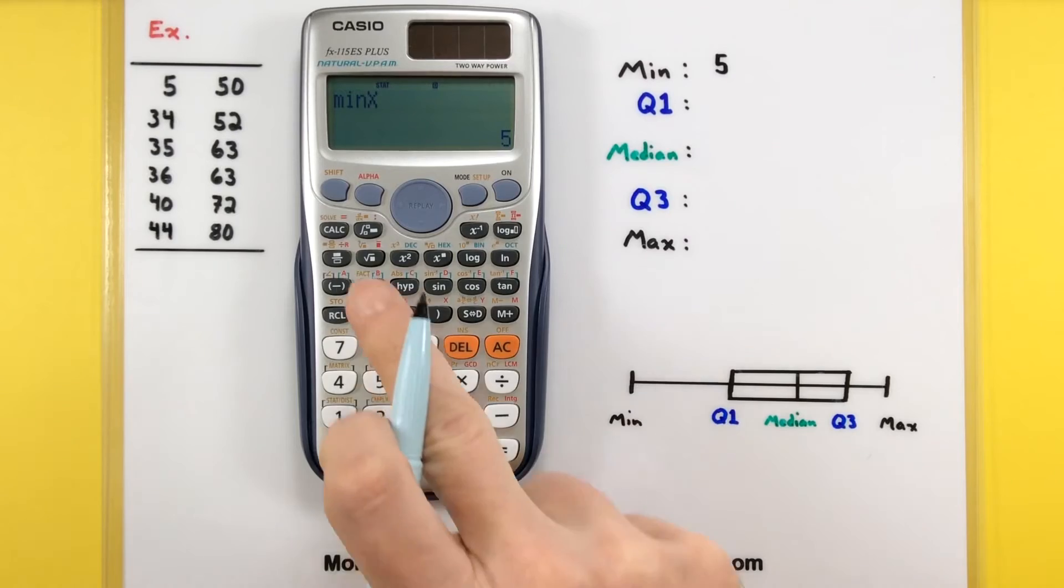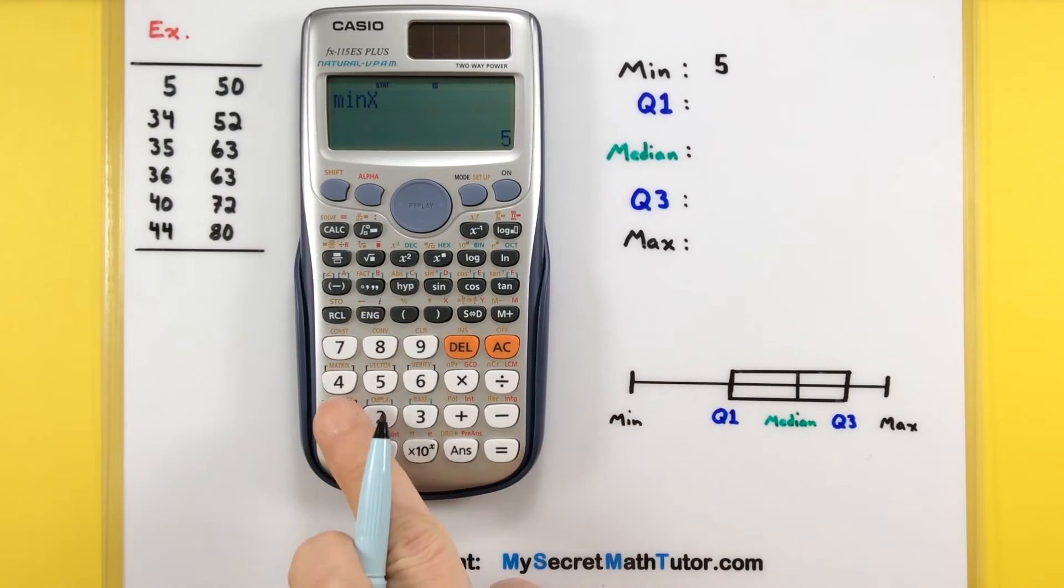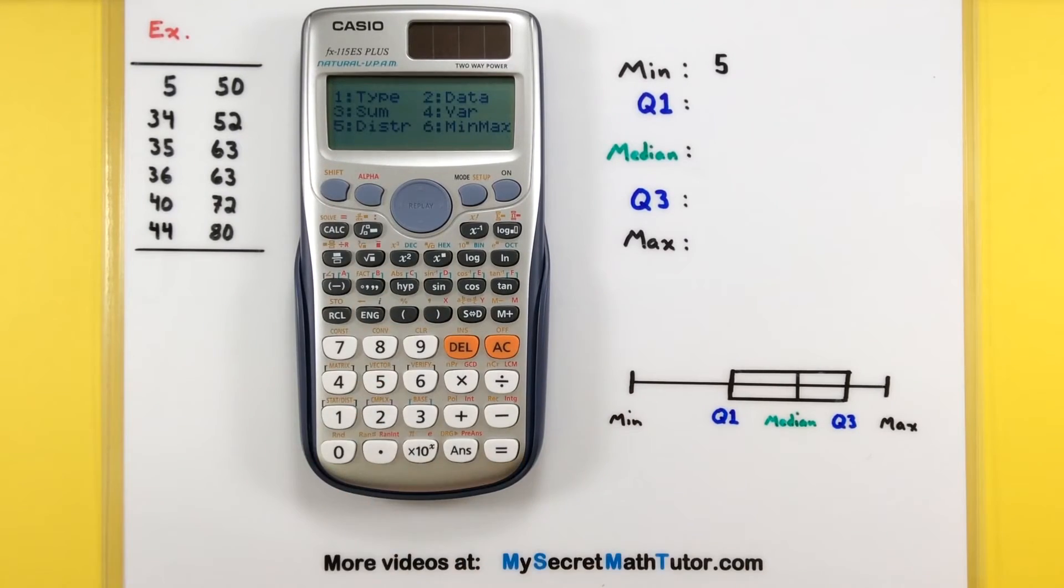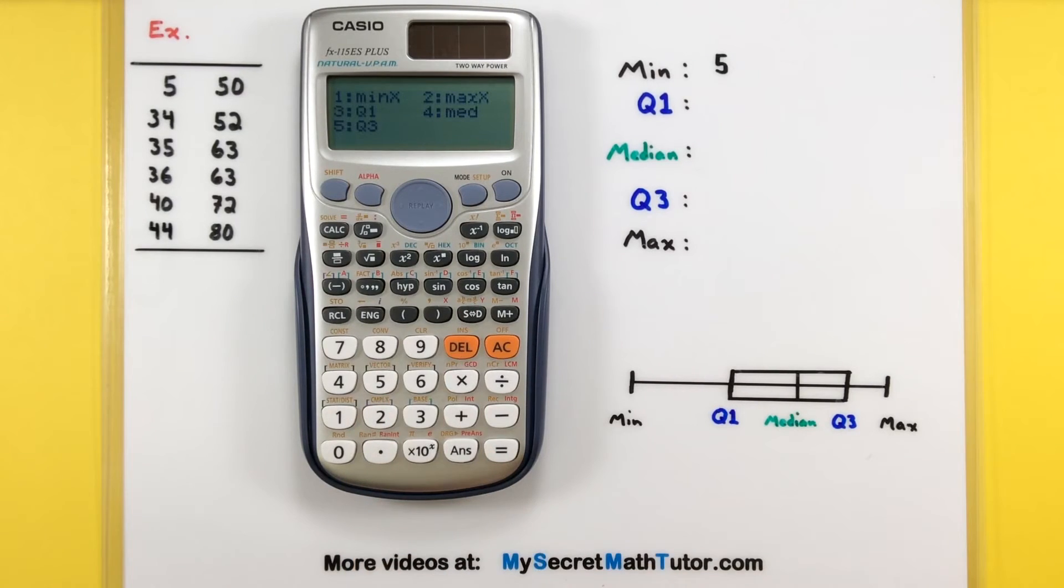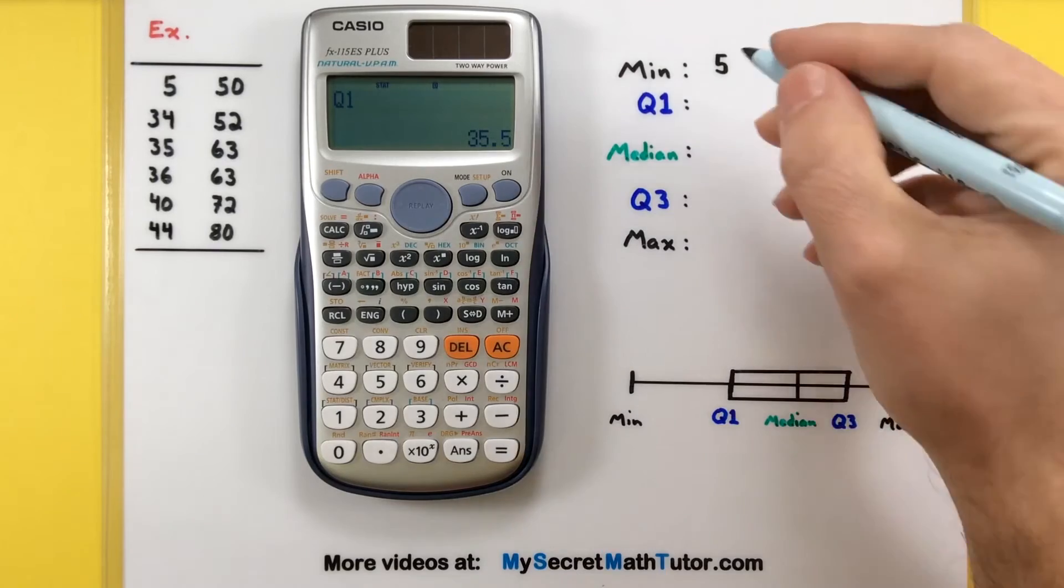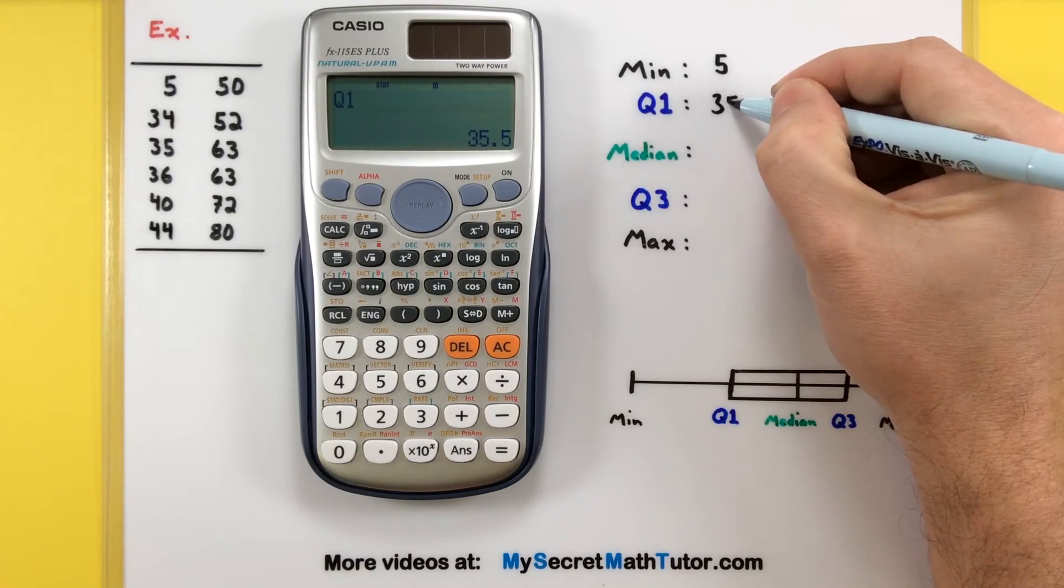Now I need more of them. So let's go ahead and press the shift and the number one again. That was the min max number six. And now we'll go into the third option for the first quartile. So that goes back on the home screen. Press enter. You can see that that's 35 and a half.